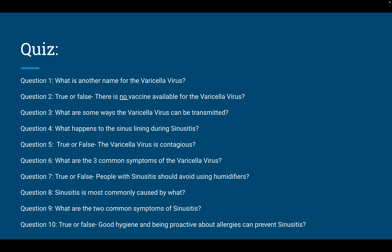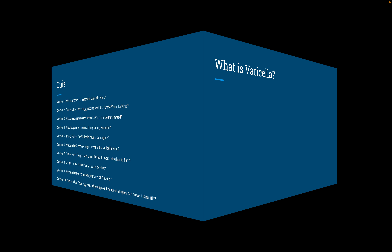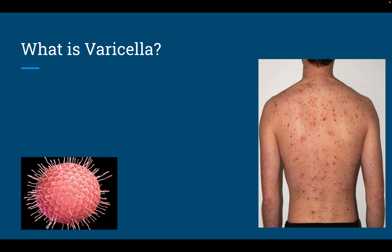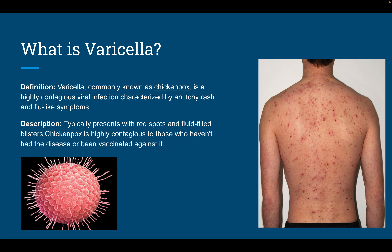We are going to start the presentation with what is the varicella virus. The varicella virus is commonly known as chickenpox. It is a highly contagious viral infection characterized by an itchy rash and flu-like symptoms such as fever, fatigue, and headache. The main feature of the varicella virus is the blister-type rash. It typically presents as red spots that are also fluid-filled blisters, making it very painful and itchy.